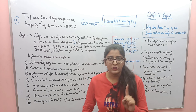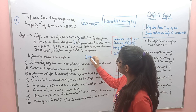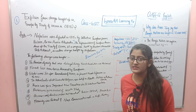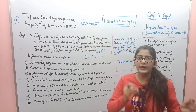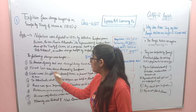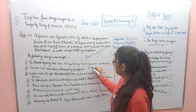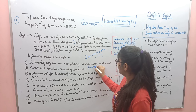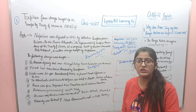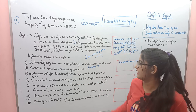First point aapko yaad ho gaya: Bourbon restore. Jab yeh keyword aapke mind mein hai, second point — 'the Bourbon dynasty was restored.' Next, 'French lost territories' — French haar gaya tha, French lost the territories. Yeh bhi aap likh doge, marks milenge.